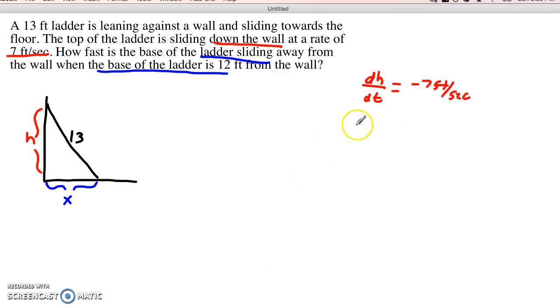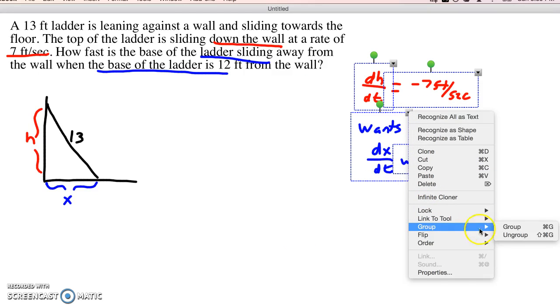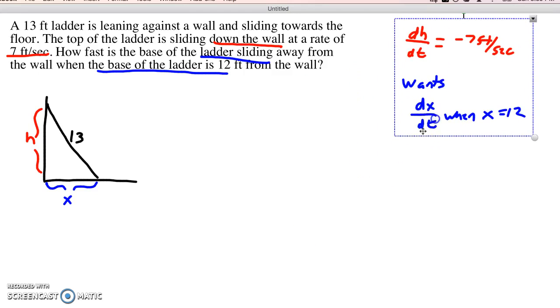That's the rate. What we're looking for, we want to find what is dx dt, which is to say the rate of change of x when x equals 12. That's what we're interested in finding in this problem. So the negative 7 feet per second we're given, we're trying to find what is the rate of change of x with respect to t at the moment that x equals 12.